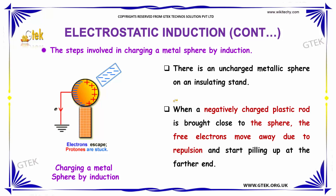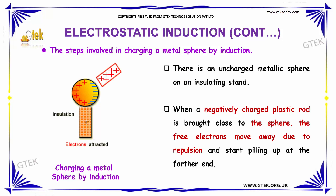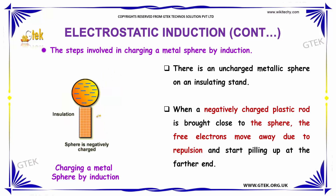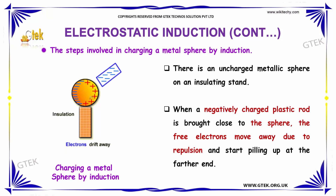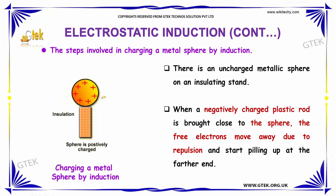If we look at electrostatic induction, there are some steps involved in charging a metal sphere by induction. The first step is: there is an uncharged metallic sphere on an insulating stand. When a negatively charged plastic rod is brought close to the sphere — as you can see here, the plastic rod is brought very close to the sphere — the free electrons move away due to repulsion and start piling up at the farther end.